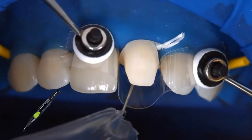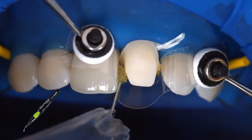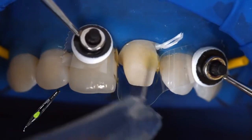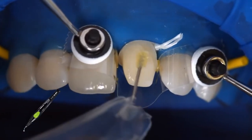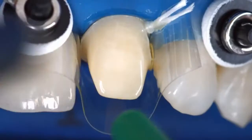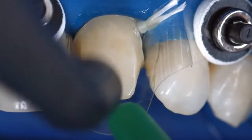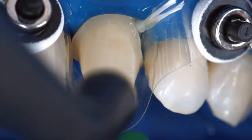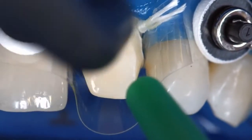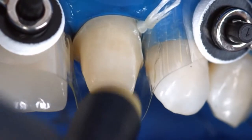Coat the entire bonding surface with Adhese Universal and scrub the adhesive in for 20 seconds. Disperse excess amounts of Adhese Universal with a stream of air until the mobile liquid film has disappeared. Make sure to avoid pooling.